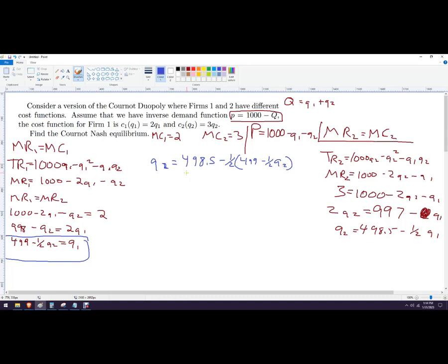So we'll do that. It's 499 minus 0.5 Q2. And so now I've got Q2 equals 498.5 minus 0.5 of that. So 0.5 of 499 is 249.5.